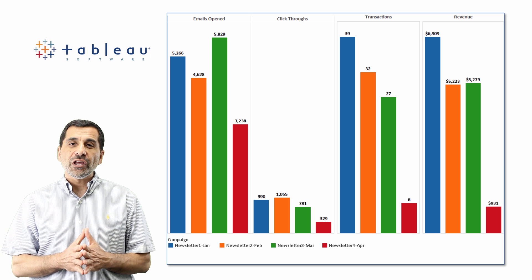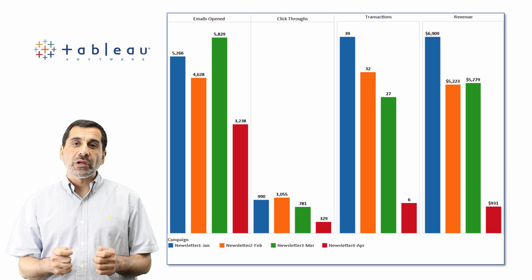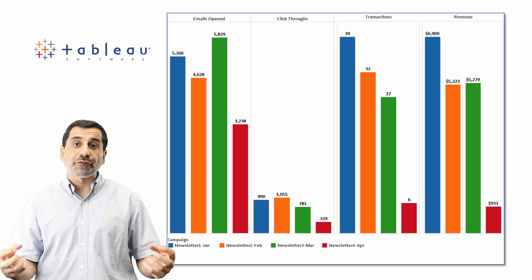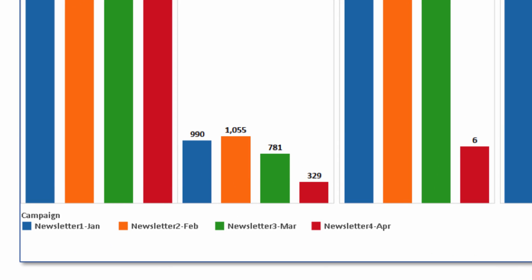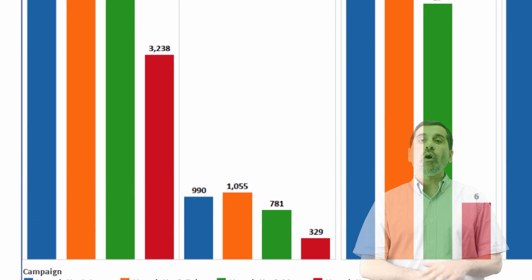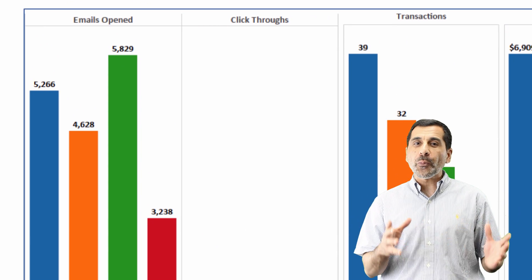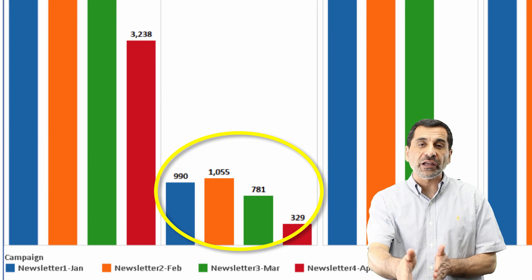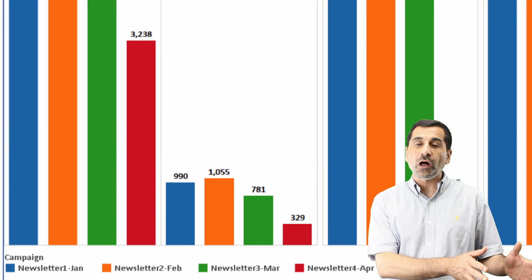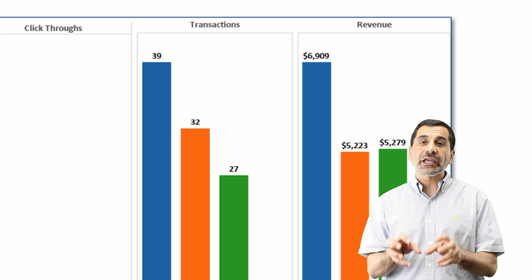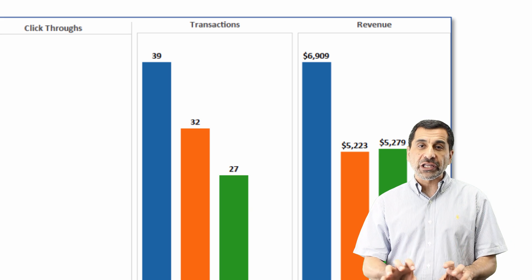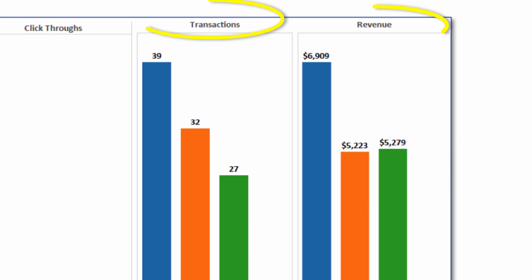Moving on, this is where you start leveraging Tableau to connect data from different sources. On the left-hand side you see our email traffic — all the emails we sent, how many got opened, and of those opened, how many were clicked and drove people to the site. Then we look at actual on-site data from those email marketing campaigns — transactions and revenue.